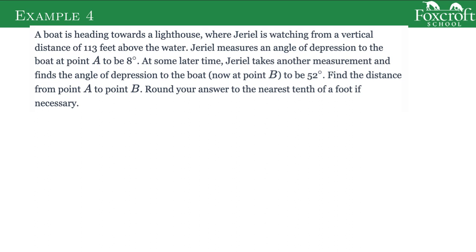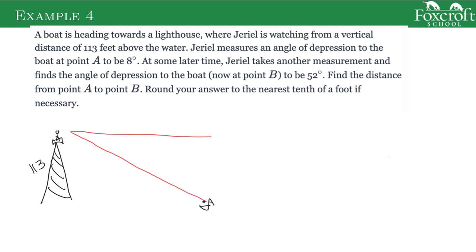Hopefully that's enough for you to get a basic idea of how these word problems are working. A boat is heading to a lighthouse where Jerry is watching from 113 feet, so we have this lighthouse with our guy standing up there, and he's 113 feet above the water. He measures an angle of depression from a point at boat A — the boat is on the water at point A — so he looks out flat and looks down at the boat, and this angle is 8 degrees. At some point later the boat has gotten closer, now it's at point B, and now you have to look down again from the flat line at 52 degrees. Find the distance the boat traveled from A to B.